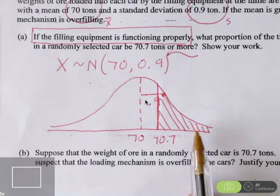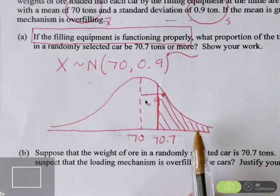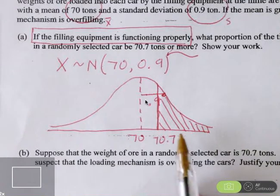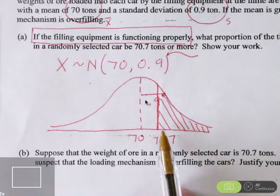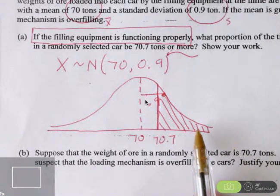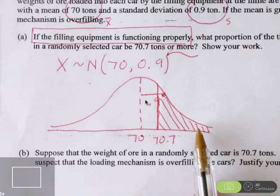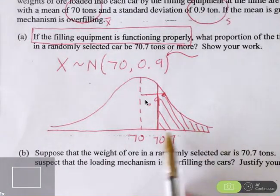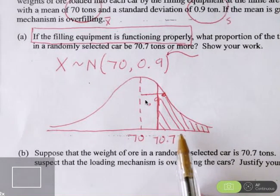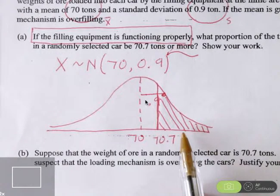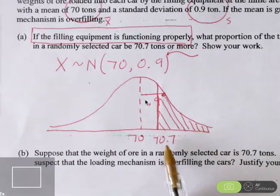That area will represent the percentage of the time that this will occur. Recognize here that we are going to get a significant amount of area where we get more than 70.7 tons. Even though the average is 70, we still can get some variability and get more than that in the hopper car. To find that exact amount, let's actually calculate a z-score.